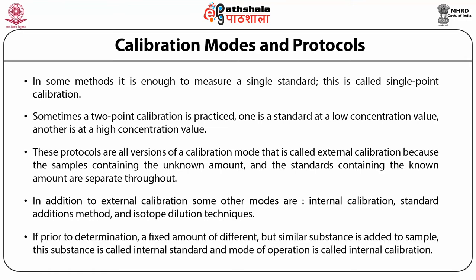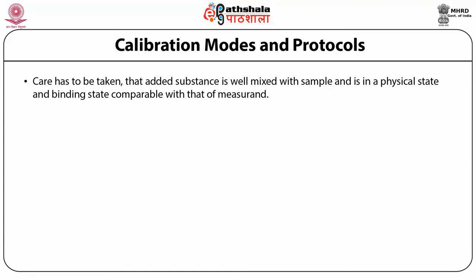In addition to external calibration, some other modes are also important: internal calibration, the standard addition method, and the isotope dilution technique. If prior to the determination a fixed amount of a different but similar substance is added to the sample, this substance is called the internal standard and the mode of operation is called internal calibration. The addition serves the purpose of controlling a critical step that would otherwise introduce a large element of uncertainty. Therefore it is wise to add the surrogate substance as early as possible in the analytical procedure. Care has to be taken that the added substance is well mixed with the sample and is in a comparable physical and binding state to the analyte.